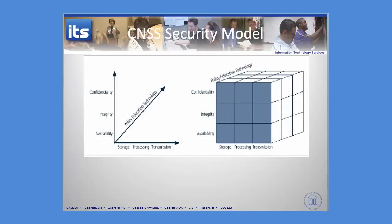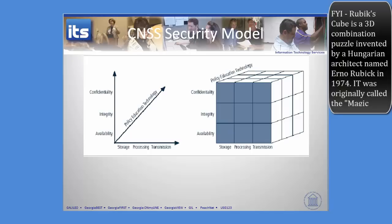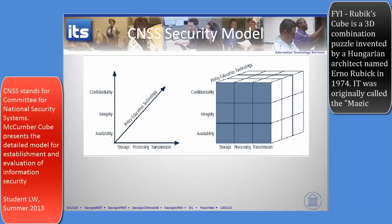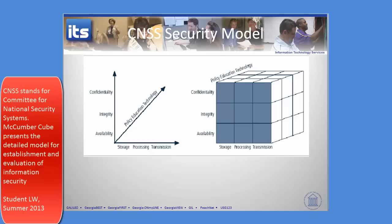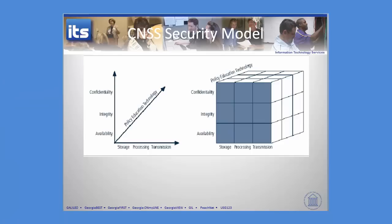This is the CNSS security model. I'm not going to tell you what CNSS stands for — you're going to have to look it up. Most people in business are going to be familiar with this idea that confidentiality, integrity, and availability are key characteristics of information. The horizontal axis of storage, processing, and transmission says data is going to be in one of those three states at any time — stored, being processed, or being transmitted — and it could be attacked.